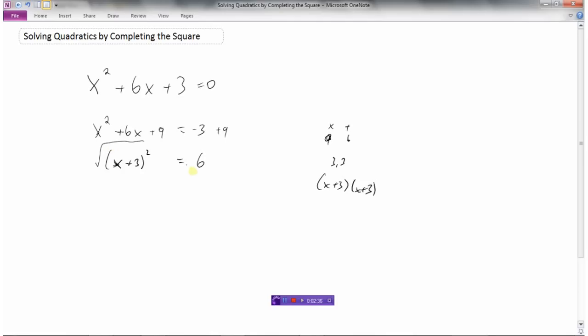So if I take the square root of both sides, this would just give me x plus 3, because I've gotten rid of the squared. On the right side, remember every time we square root, we're going to need plus or minus. So we have plus or minus root 6. And then to isolate x, we just need to minus 3 from both sides.